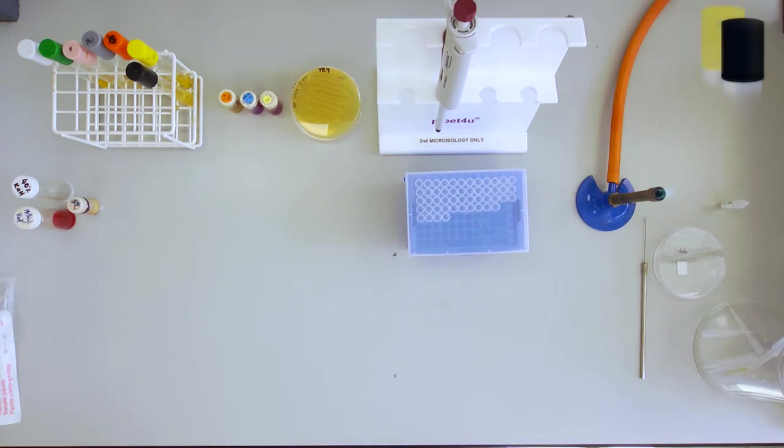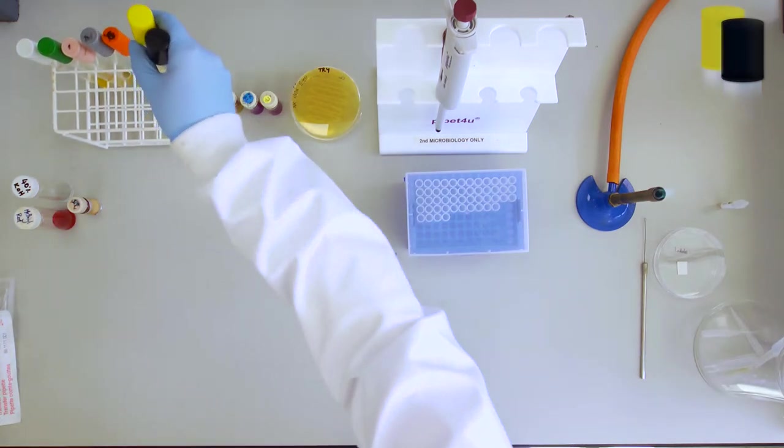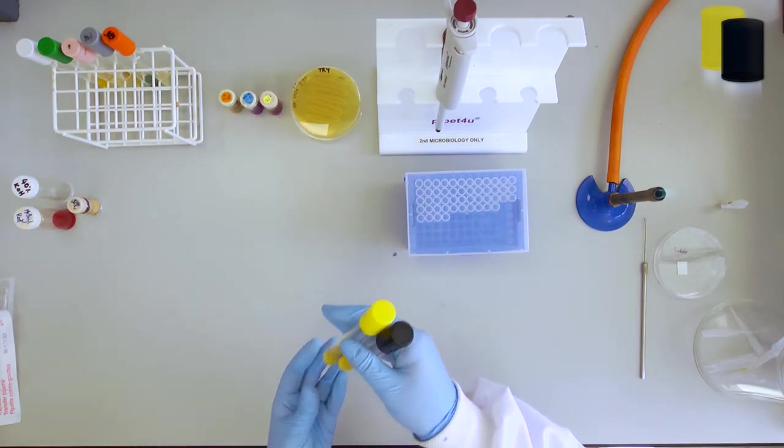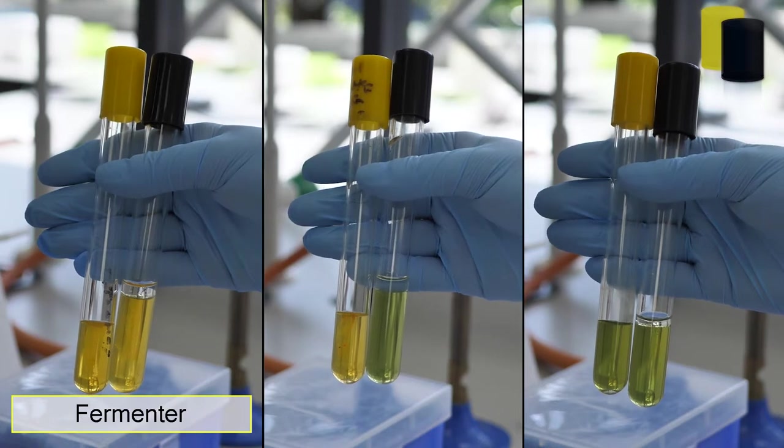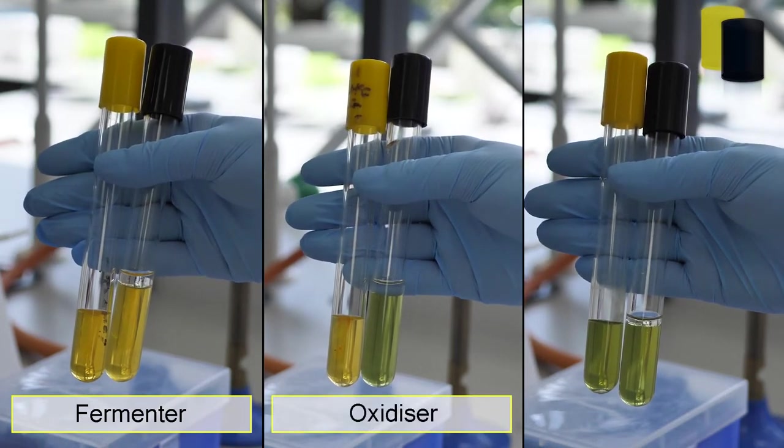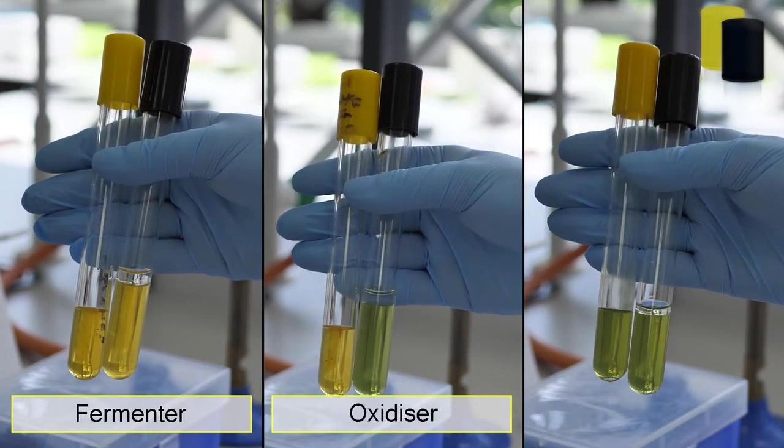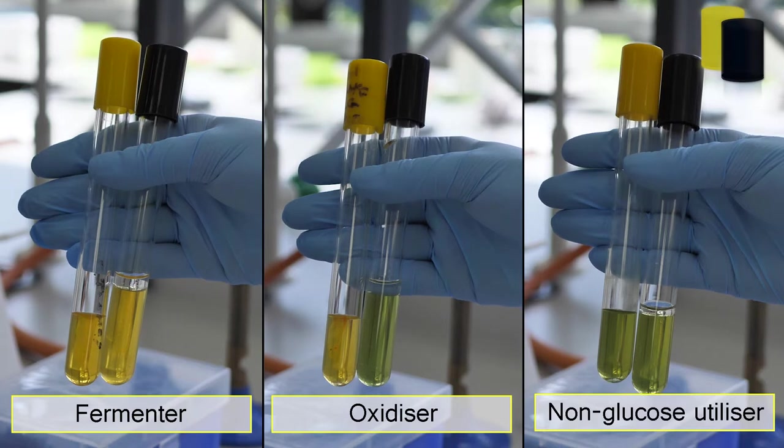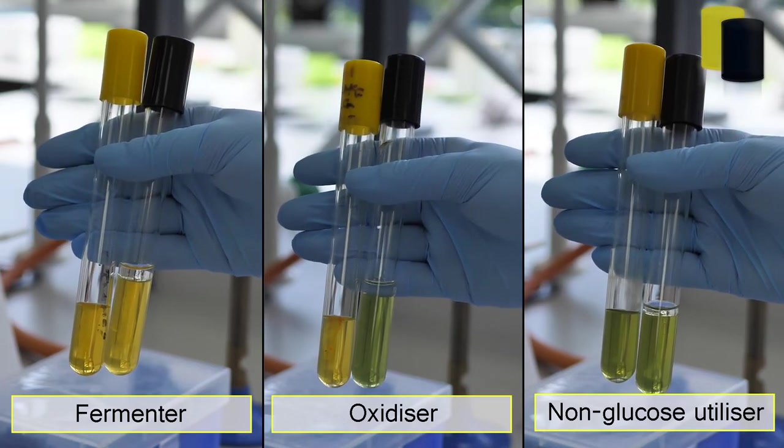The Hugh and Leifson test results are observed together. Fermenters produce a yellow colour in both tubes. Oxidisers show a colour change from green to yellow in the tube without oil only. A culture showing no colour change in either tube is a non-utiliser of glucose.